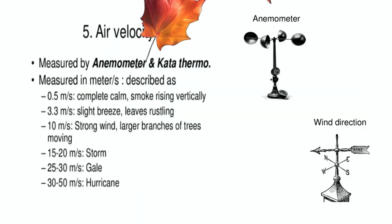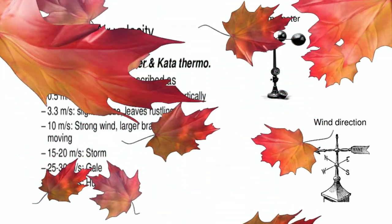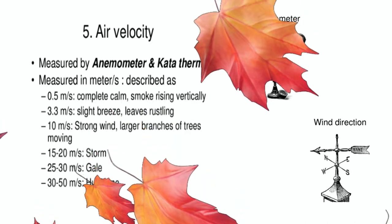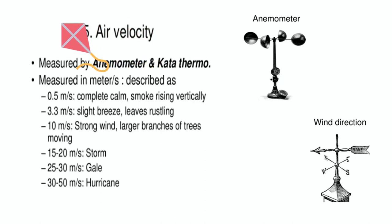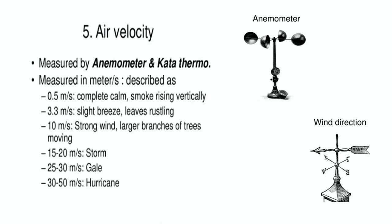The fifth element is air velocity, which is mainly measured by an anemometer or wind direction instrument. Air velocity simply means wind speed, including wind direction, and it is usually measured in meters per second. A speed of 0.5 m/s indicates complete calm with smoke rising vertically, 3.3 m/s indicates a slight breeze with leaves rustling, 10 m/s indicates strong wind with tree branches moving, 15 to 20 m/s indicates a strong gale, 25 to 30 m/s indicates a gale, and 30 to 50 m/s indicates a hurricane.